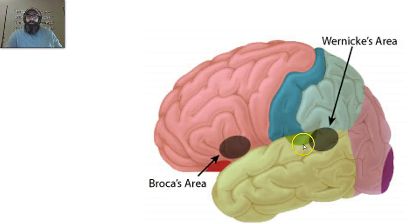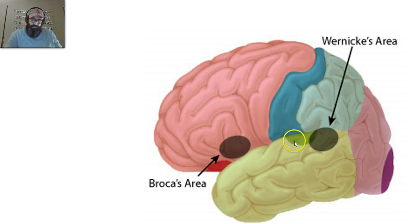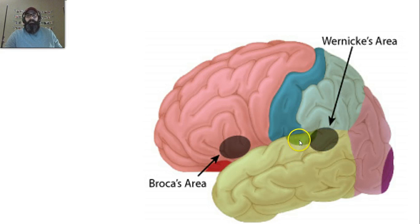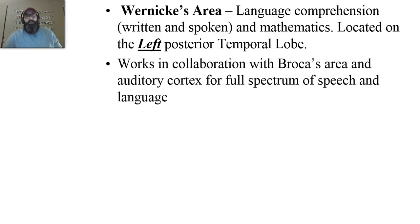Looking at this picture, here's the temporal lobe in green with the shaded Wernicke's area. Take note that the auditory area and auditory association area are also shown. Broca's area is highlighted here because these two communicate directly with each other for language comprehension, speech, and understanding. The auditory cortex plays a third role in that. Basically, Wernicke's area works in collaboration with Broca's area and the auditory cortex for the full spectrum of speech and language.